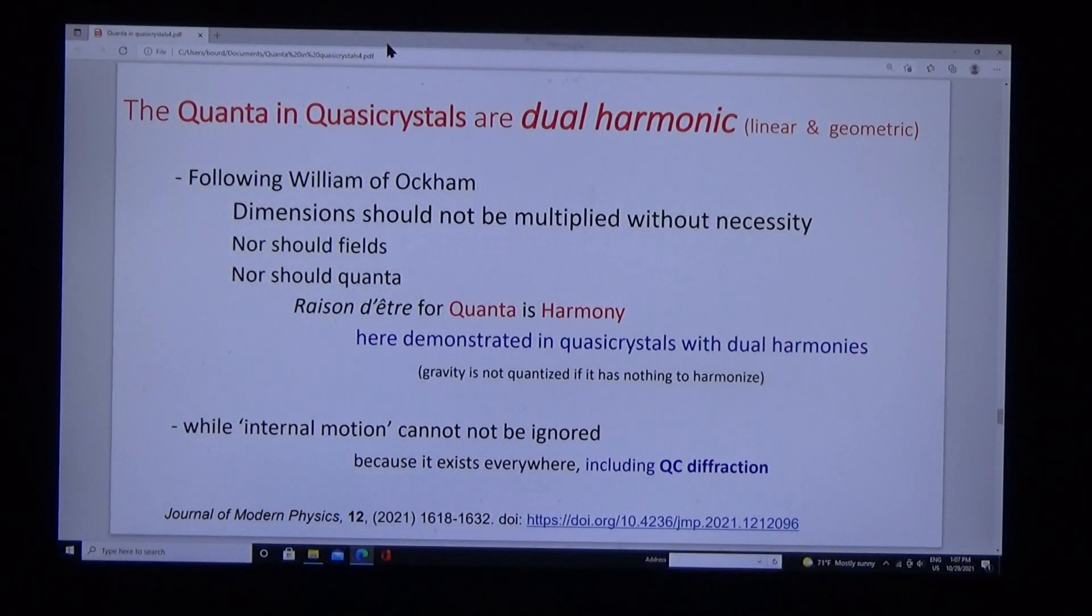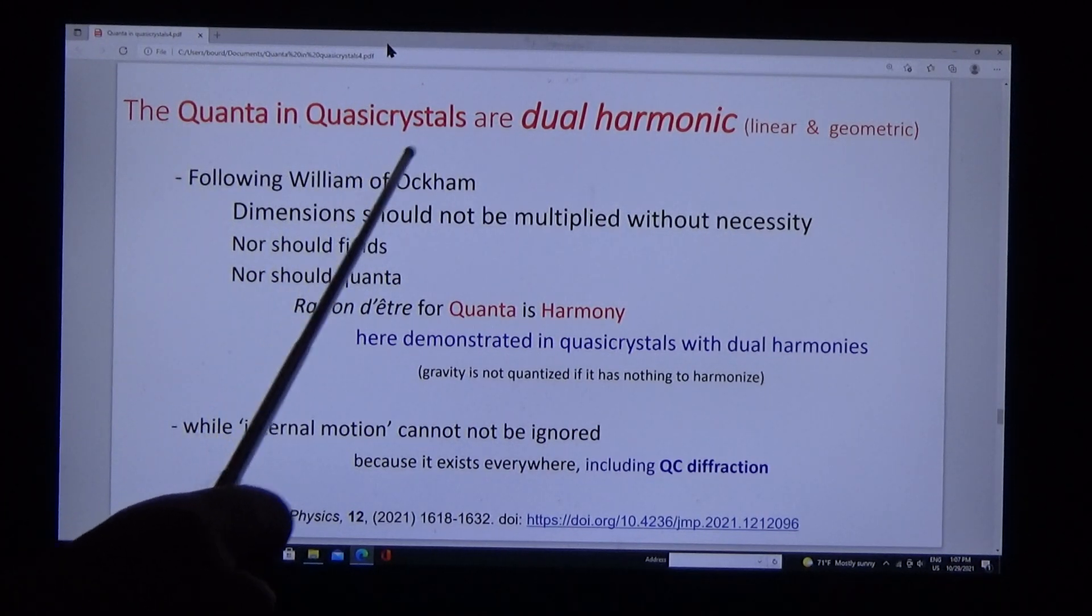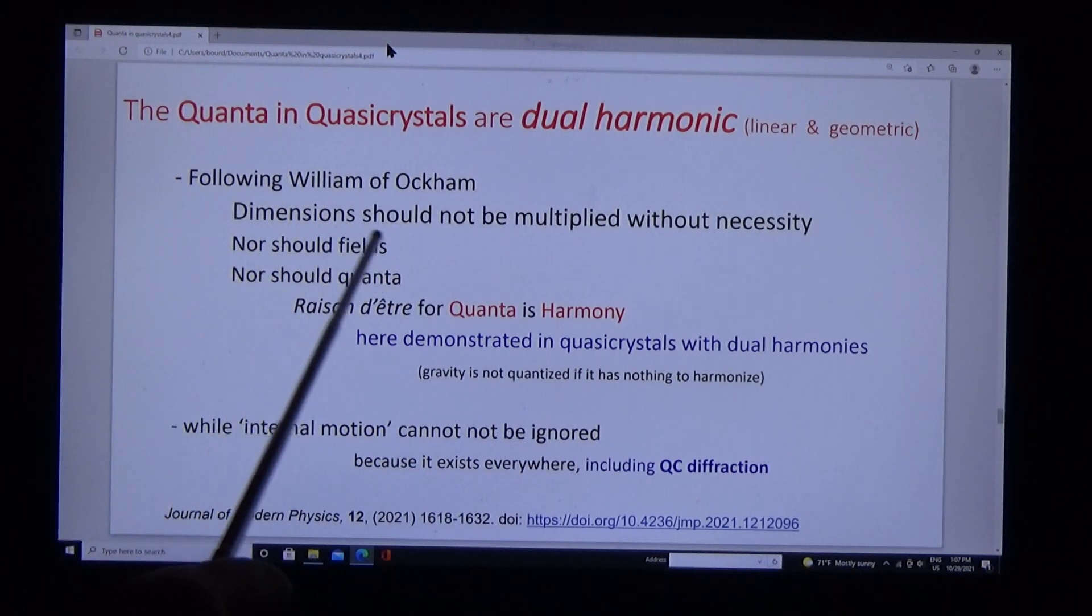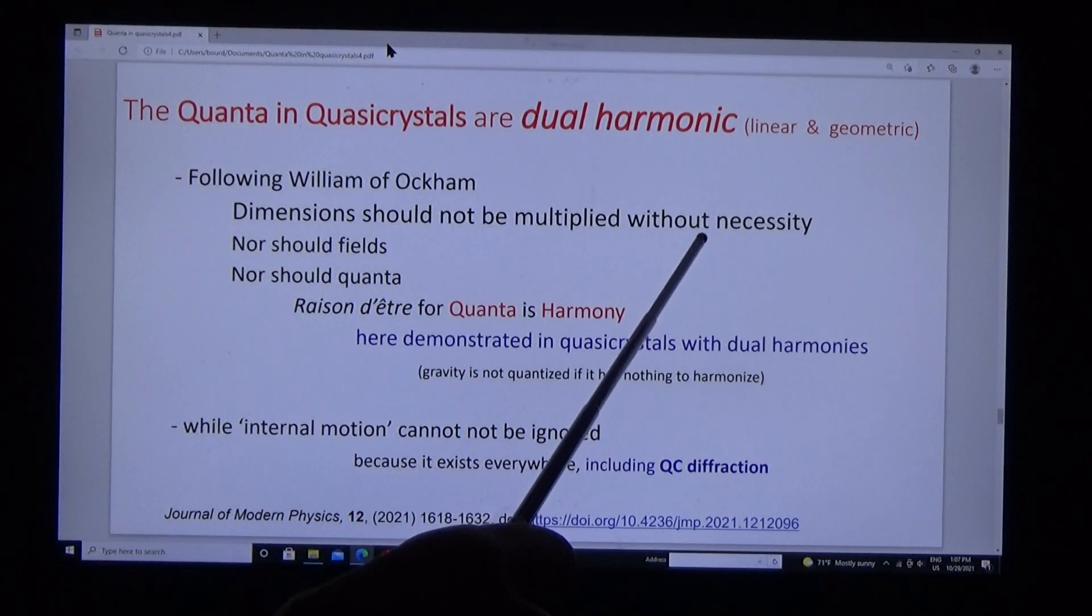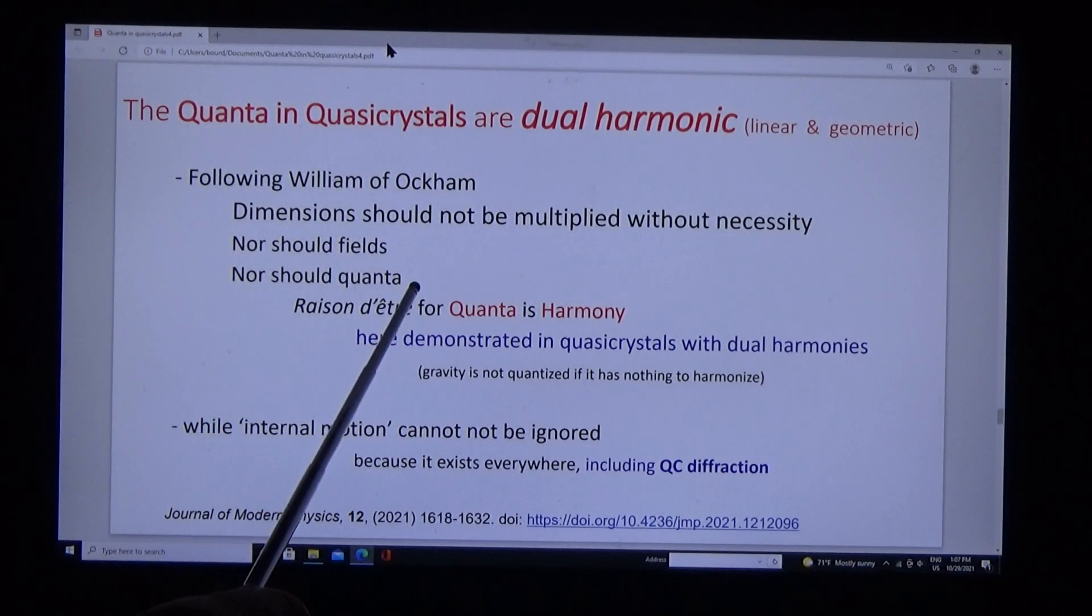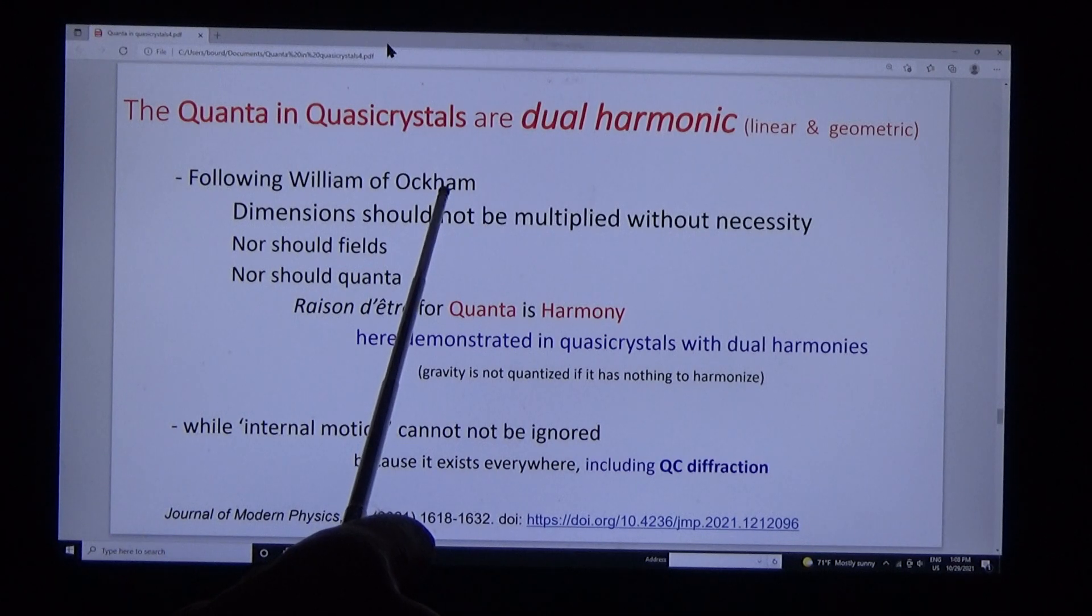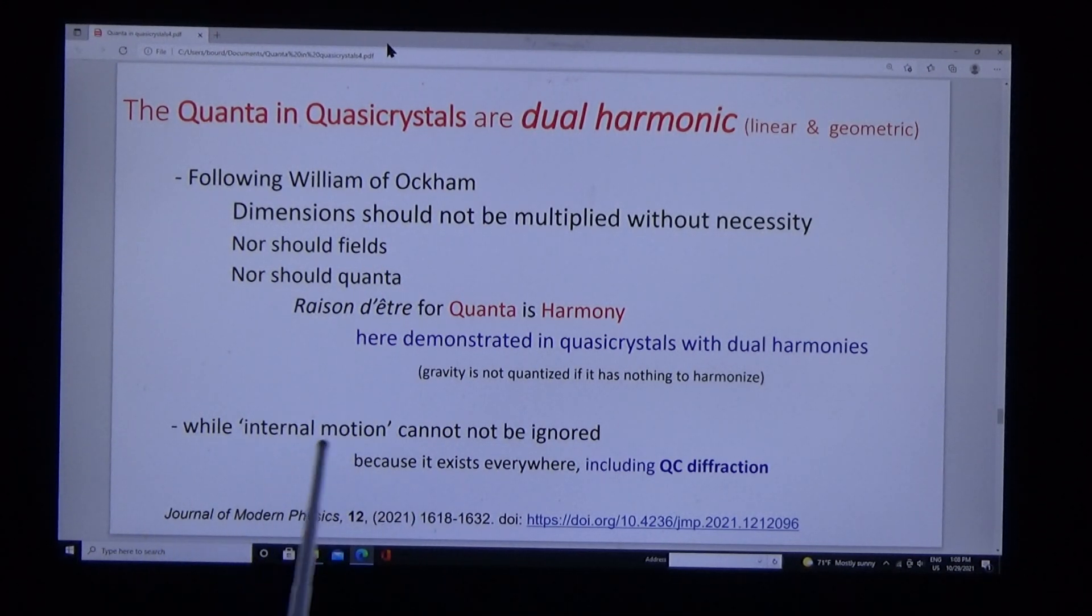Now we can wrap up. The quanta in quasi-crystals are dual harmonic. Following William of Ockham, dimensions should not be multiplied without necessity, nor should fields, nor should quanta. The raison d'être for quanta is harmony. Here demonstrated in quasi-crystals with dual harmonics. You might observe gravity is not quantized if it has nothing to harmonize. Moreover, internal motion cannot be ignored because it exists everywhere, including QC diffraction.